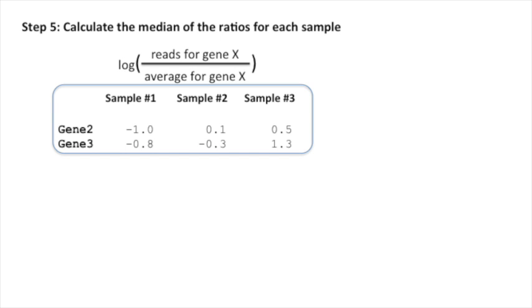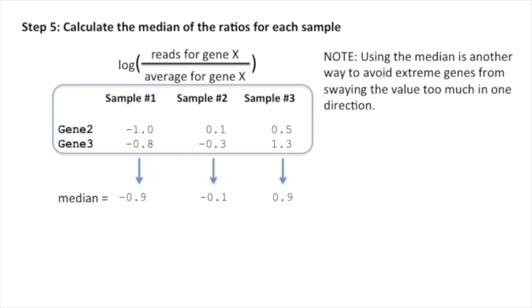So here, we have the log of the ratios of the reads for each gene divided by the average for each gene. And all we have to do is calculate the median value for each sample. Note, using the median is another way to avoid extreme genes from swaying the value too much in one direction.